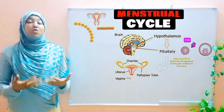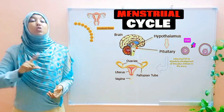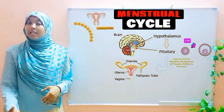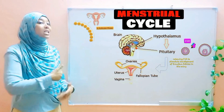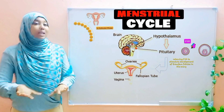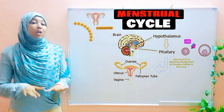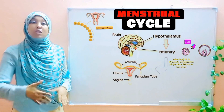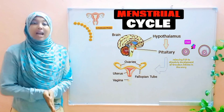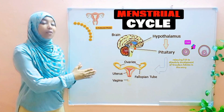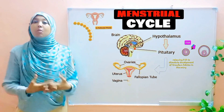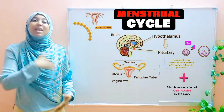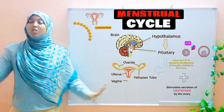Every menstrual cycle, a single egg is usually released. For the egg to be released, the graafian follicles need to develop first, which is where FSH comes in. Another function of FSH is that it also stimulates the ovary to secrete another hormone: estrogen.